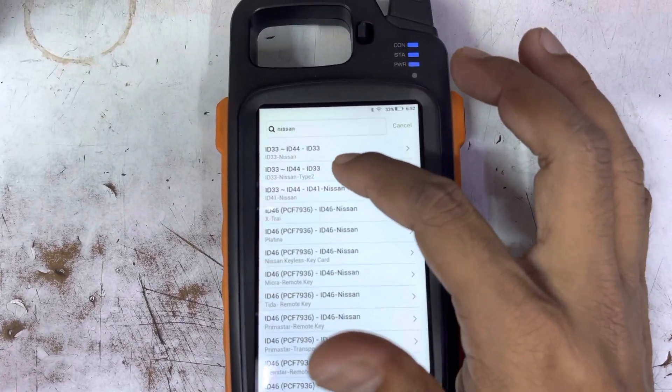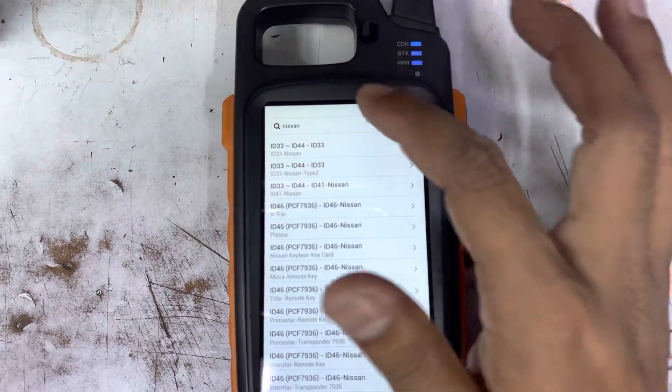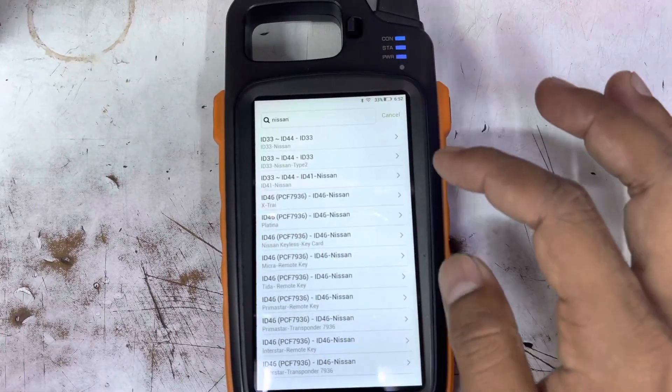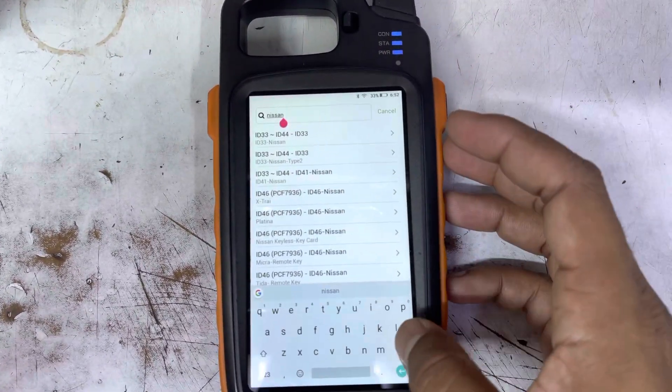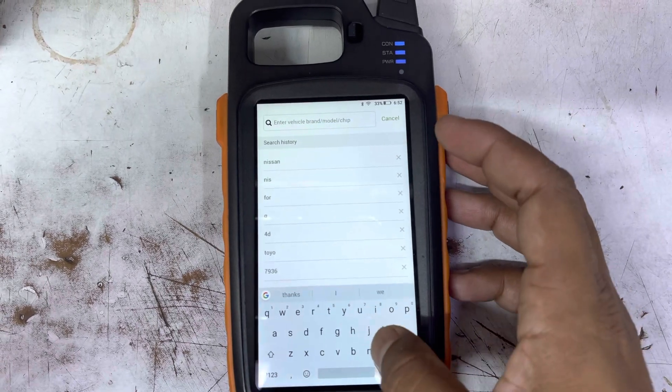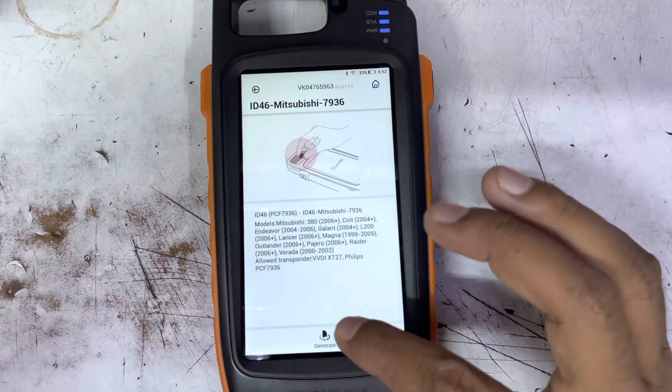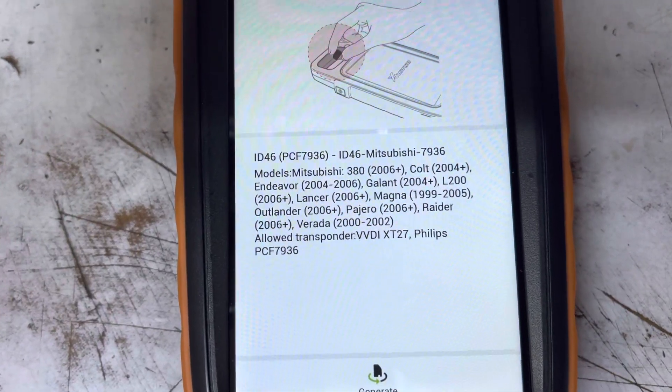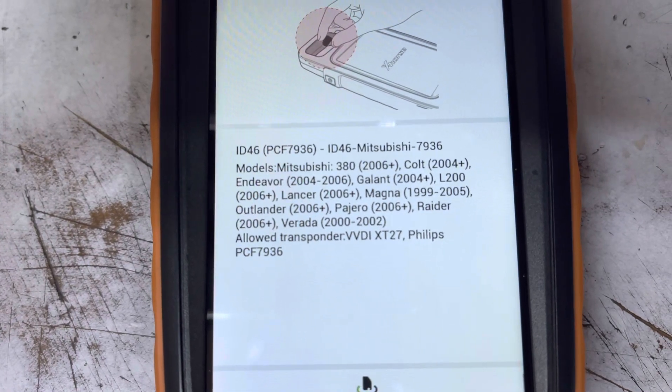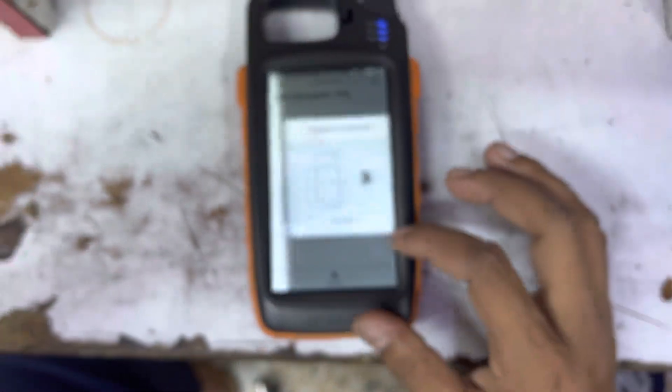Nissan 4D, soon ID 33, ID 44, anything. Or you can set it up as Mitsubishi, any car you wanted. Hey, Mitsubishi. Okay, Mitsubishi 46, check this. ID 46 Mitsubishi, buy any chips, just put it.